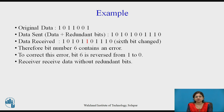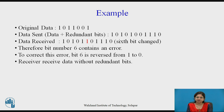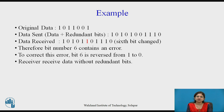The original data is 1, 0, 1, 1, 0, 0, 1. The data sent — data plus redundant bits — was 1, 0, 1, 0, 1, 0, 1, 1, 1, 0, but the data received had the 6th bit changed. To correct this error, the 6th bit is reversed from 1 to 0. The receiver, knowing this is Hamming code, automatically reverts that bit — if it is 1, it changes to 0 and vice versa. This Hamming code method performs both error detection and correction, but only for single bit errors.